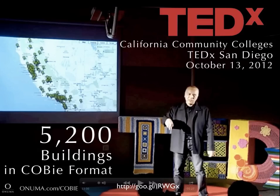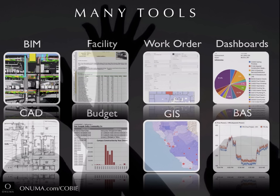Most owners are struggling with dealing with their data about their facilities. Millions and millions of data points — even with BIM it hasn't really been solved. The California Community College has 5,200 buildings that are in COBie format now. They were able to take their existing facility data, connect it to a web-based BIM application, and show dots on a map that say here are our facilities.